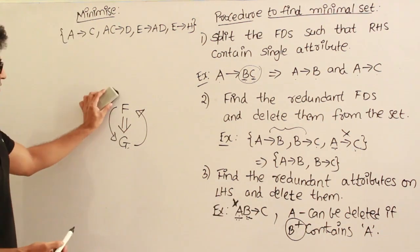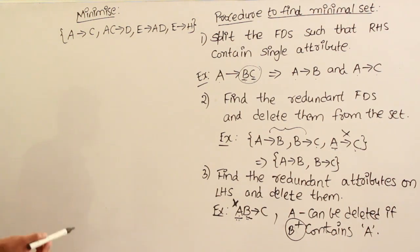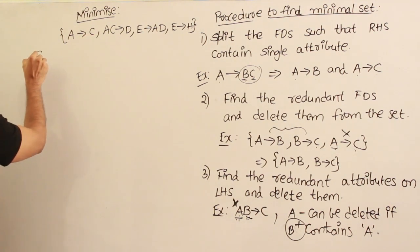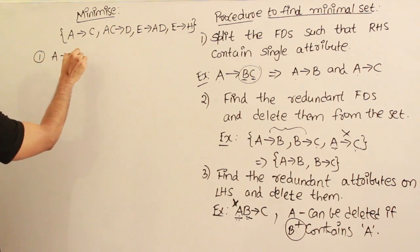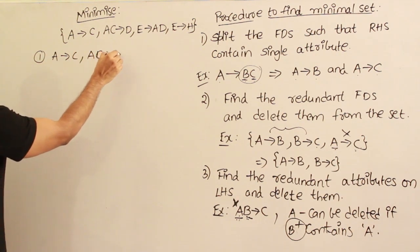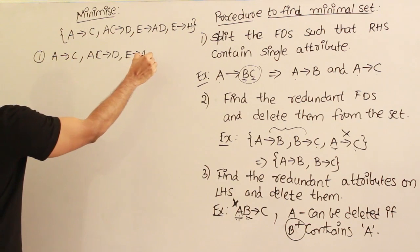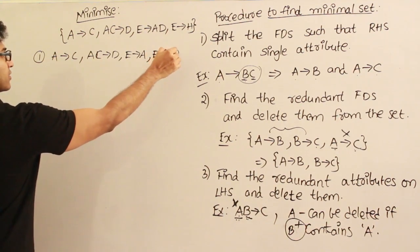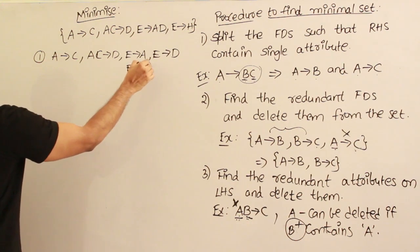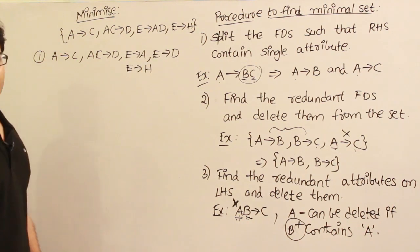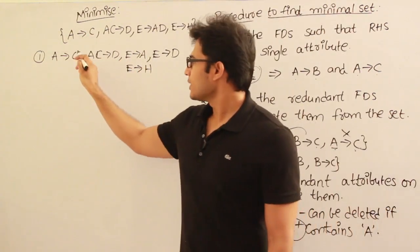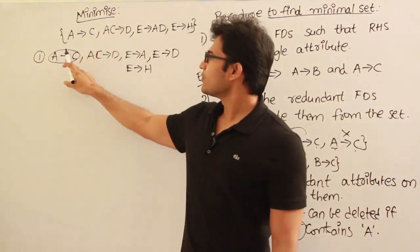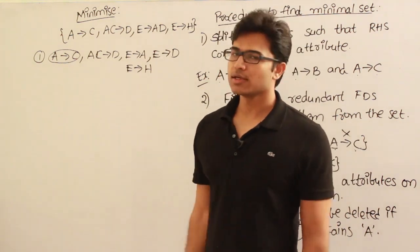Now let's see an example which will make all these steps clear. Step one: split the FDs so that the right hand side contains only one attribute. A determines C has one attribute. AC determines D has one attribute. E determines A has one attribute. E determines D has one attribute. And E determines H — one attribute. Now take each production one by one and see if without it, that production could be covered by the remaining.